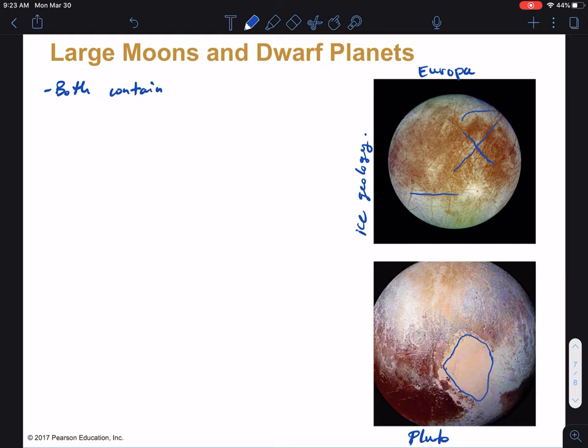So both of these types of bodies—both the moons of the giant planets and these Kuiper Belt objects like Pluto—they all contain large amounts of water ice. Their surface is probably a few kilometers thick of ice. And so we get low-energy ice geology. That's what we talked about with the cracks and the resurfacing. And we say low energy because it takes a lot less energy to do these things with ice than it does with rock.